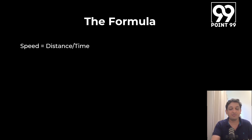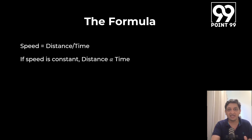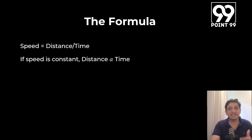To start with the basic formula: whenever we talk about time, speed and distance, the formula is speed equals distance upon time. We can figure out three relationships from this one formula. The first relationship is if speed is constant, then distance is directly proportional to time — the more time you have, the more distance you are going to cover; the less time you have, the lesser the distance you will cover.